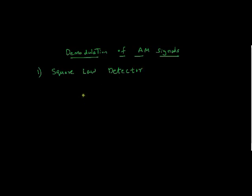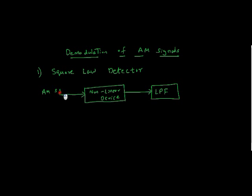The typical block diagram of this is you will be having a non-linear device and a low pass filter. You feed your AM signal here, that is to a non-linear device. Then after that you pass it to a low pass filter. Then you will get the required message signal.